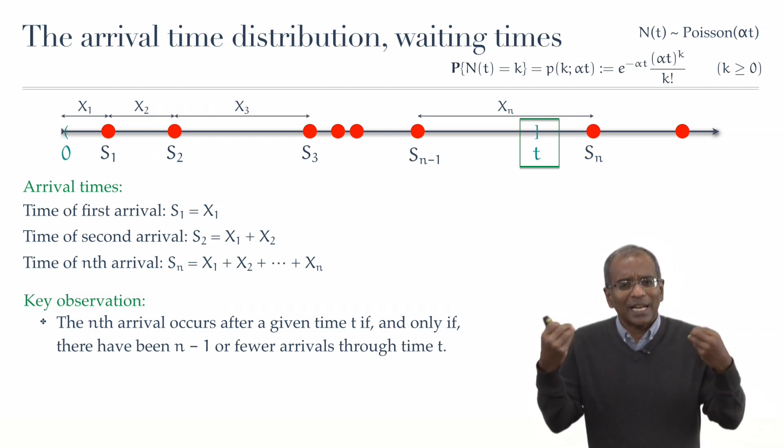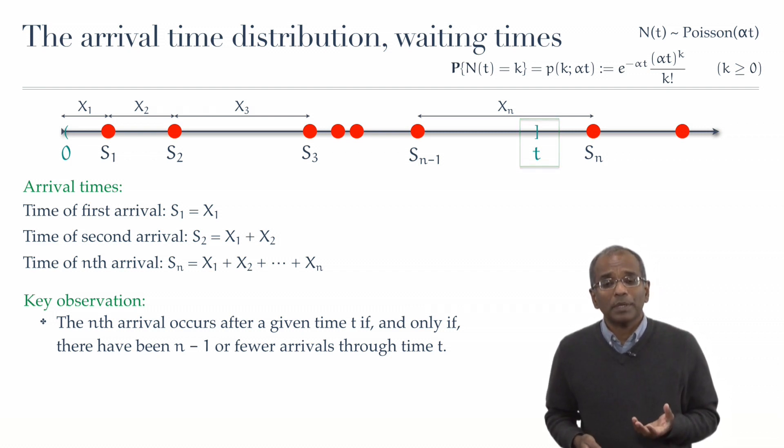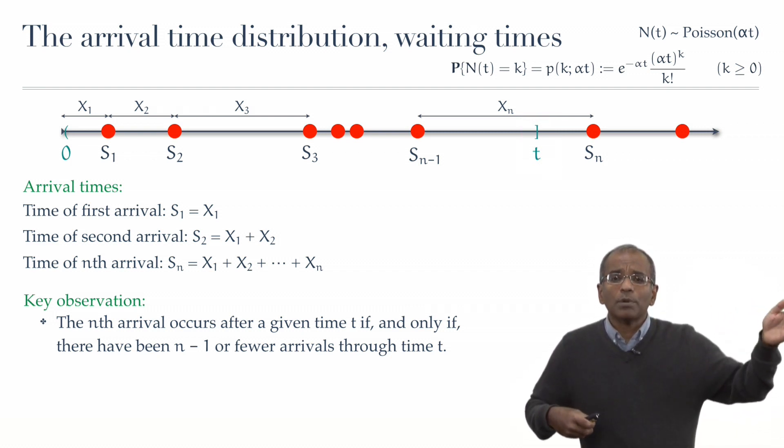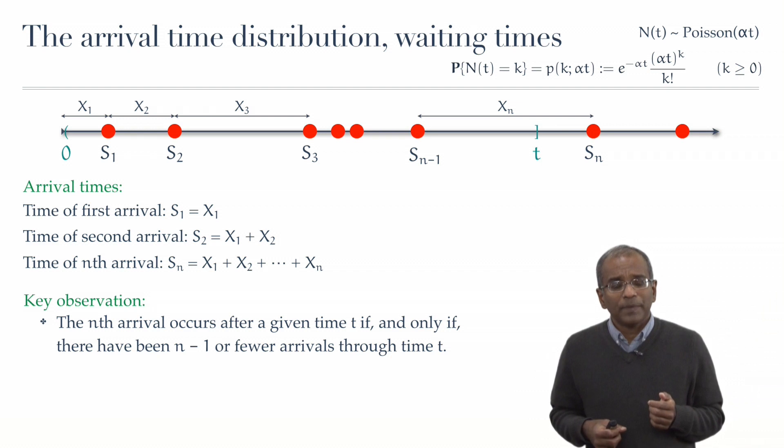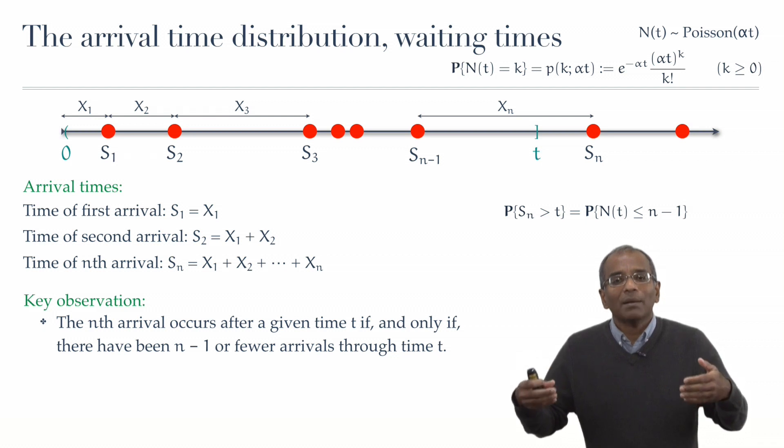Well, this is precisely the kind of observation we made for the first arrival. Now, let us very quickly write down the relevant probabilities. So fix an arbitrary positive value t. The probability that the waiting time for the nth arrival exceeds t is exactly the probability that the number of arrivals N(t) up till t is no more than n-1.